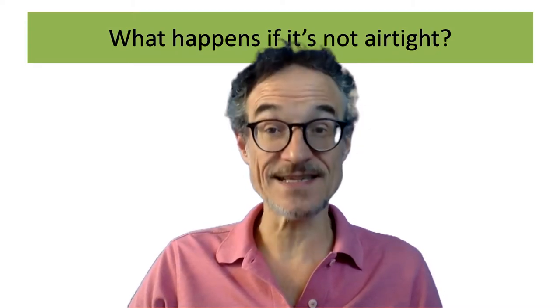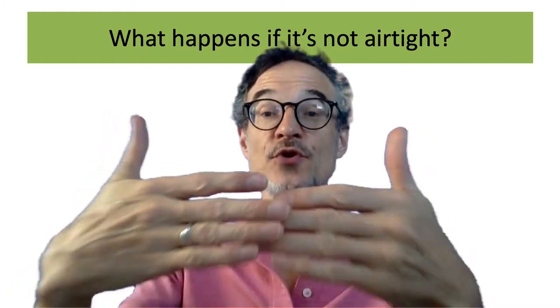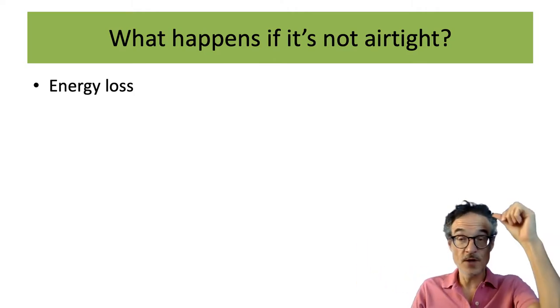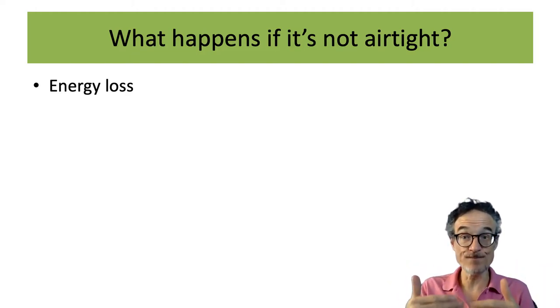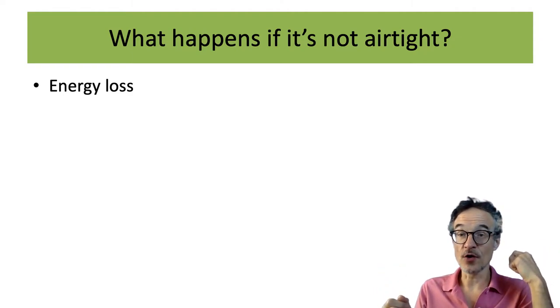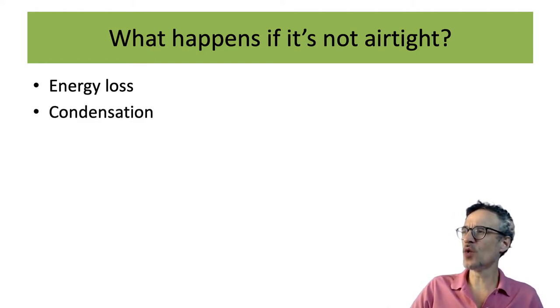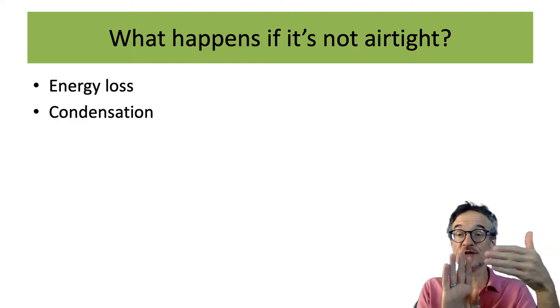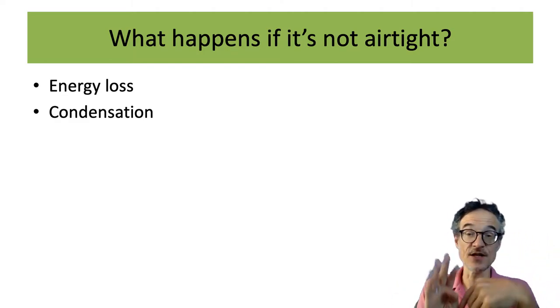So we know how to measure airtightness and insulation. What happens if a building is not airtight — if it's leaking air through the walls? Two things can happen. First, if it's winter and your house is warm inside, any air leaking out means you're losing heat. If it's very cold outside and warm inside, you'll lose lots of energy and need extra heating to make up for all the warm air leaving. Also, as hot air moves through your walls and cools down, there's a risk of condensation forming somewhere inside the wall.